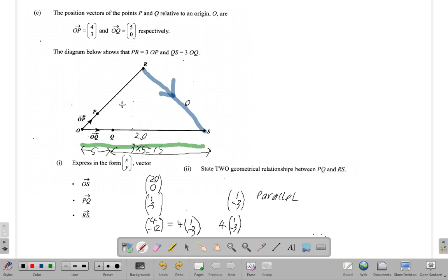You could see it here as well. For PQ you move this way, for RS you move this way, so they are parallel.